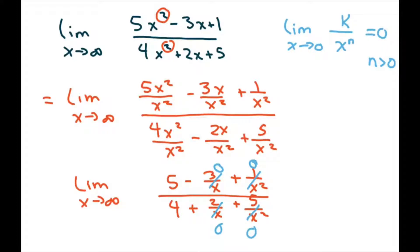And what we have is 5 minus 0 minus 0 divided by 4 plus 0 plus 0. We should probably put the limit here because x tends to infinity. And this equals 5 divided by 4.